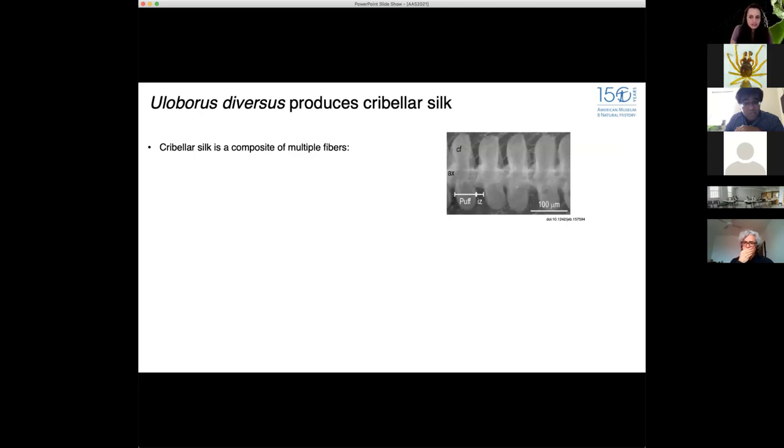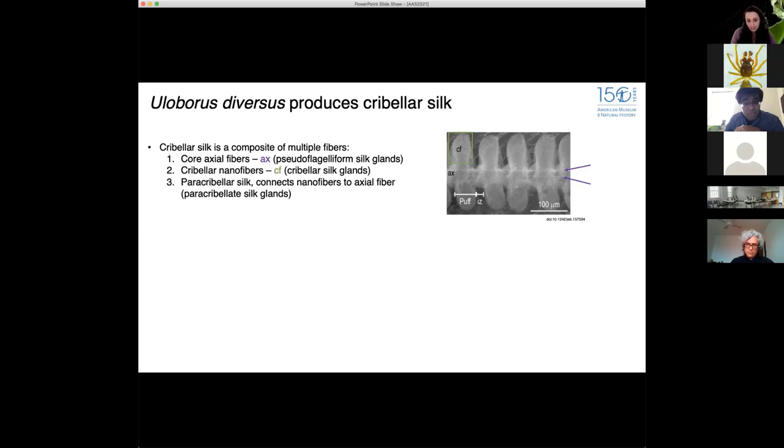One of these families is the Uloboridae, which is the topic of this talk. So uloborids are special in a way because not only do they produce cribellate capture threads, but they also make orb webs. So what is cribellate silk? Just as a brief introduction, it's a composite of multiple silk fibers, at least that we know. We have the intersection made of this pair of core fibers, which we think is made in the pseudoflagelliform silk glands. There is also the cribellate nanofibers, and these fibers are produced in the cribellous silk glands, which are located on the cribellum. There is also this third type of silk, the paracribellate silk, and this silk is thought to connect the nanofibers to the core or the main fiber.